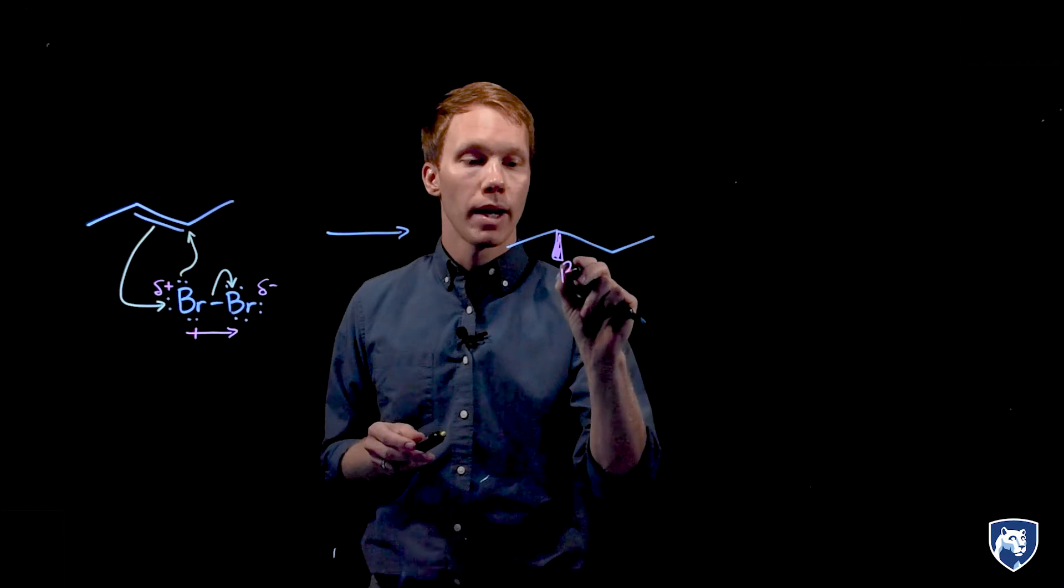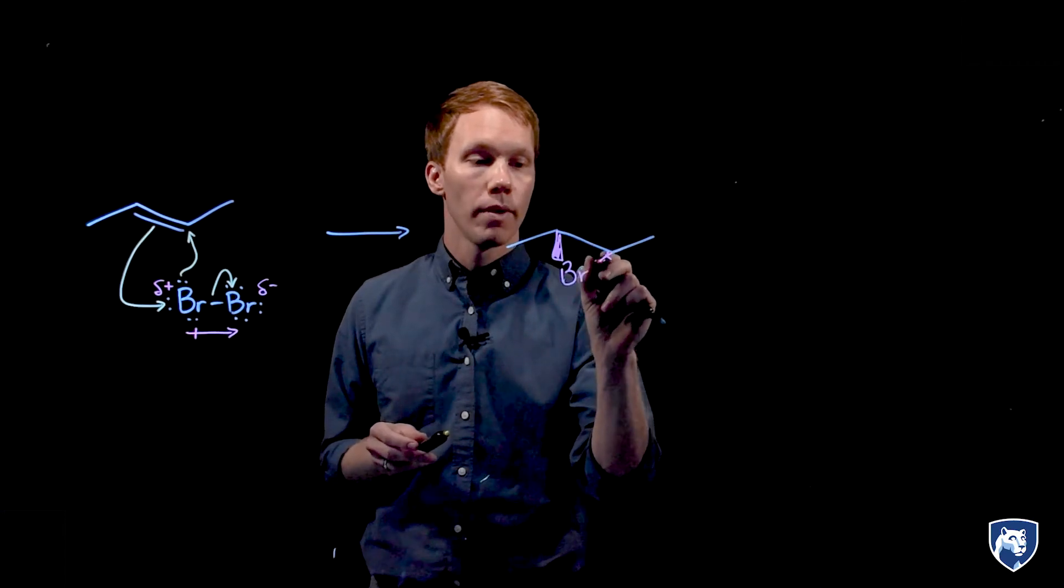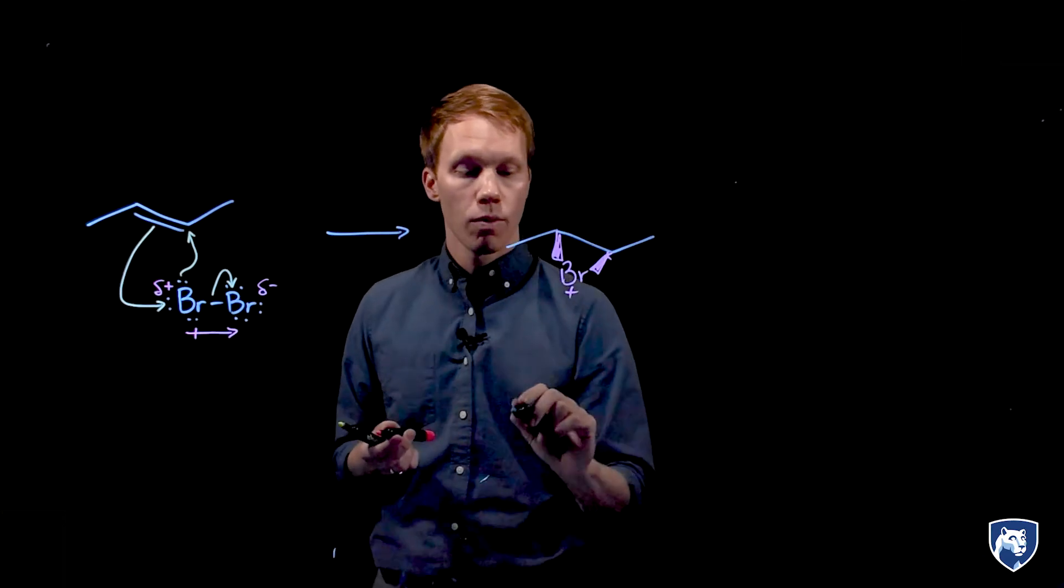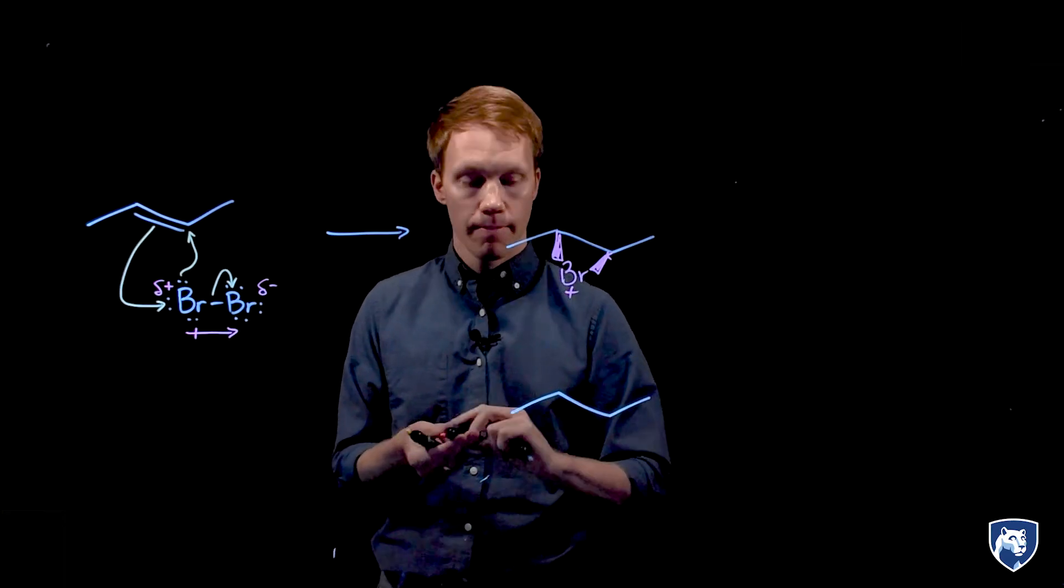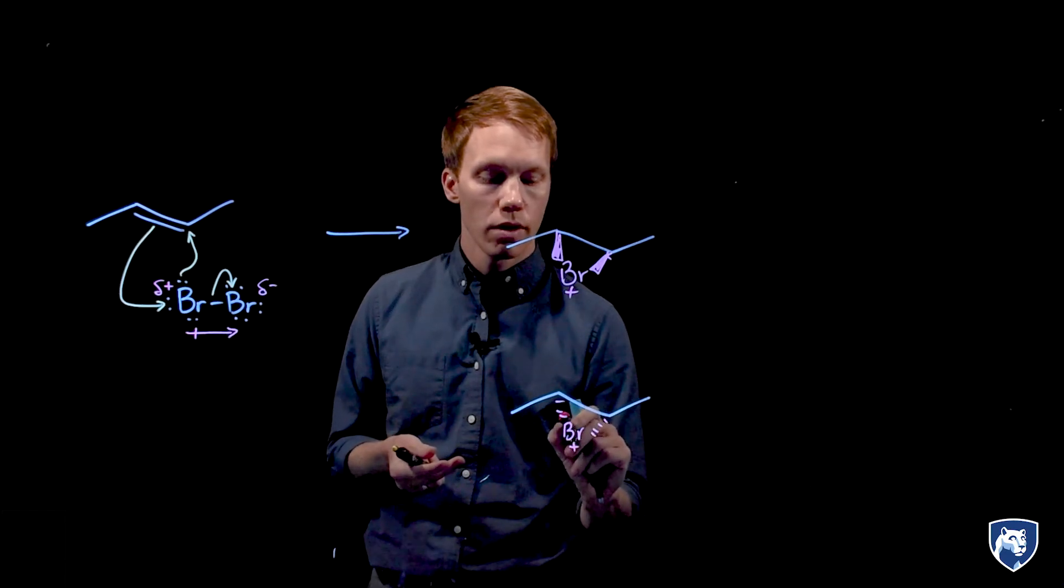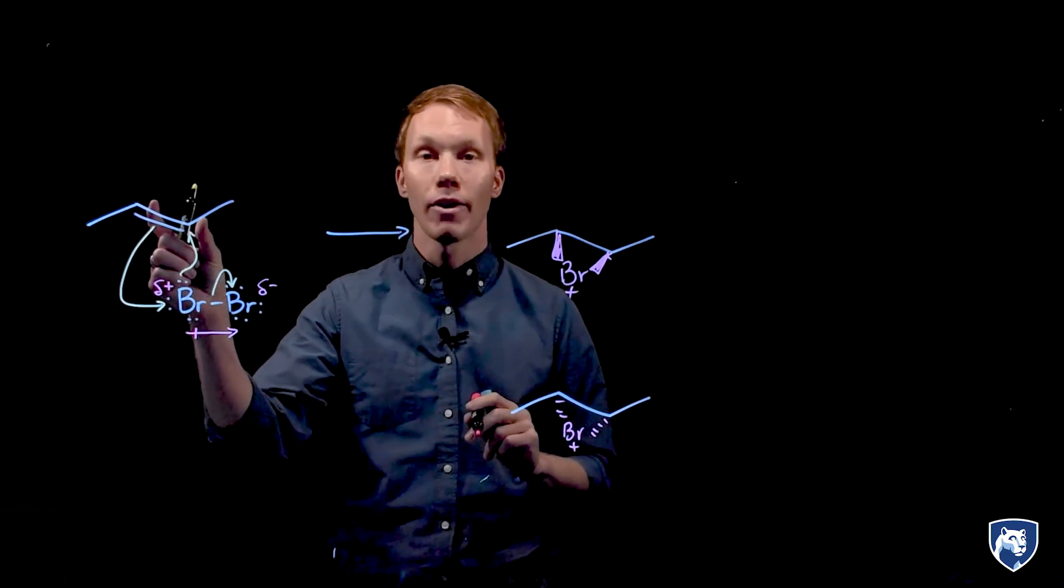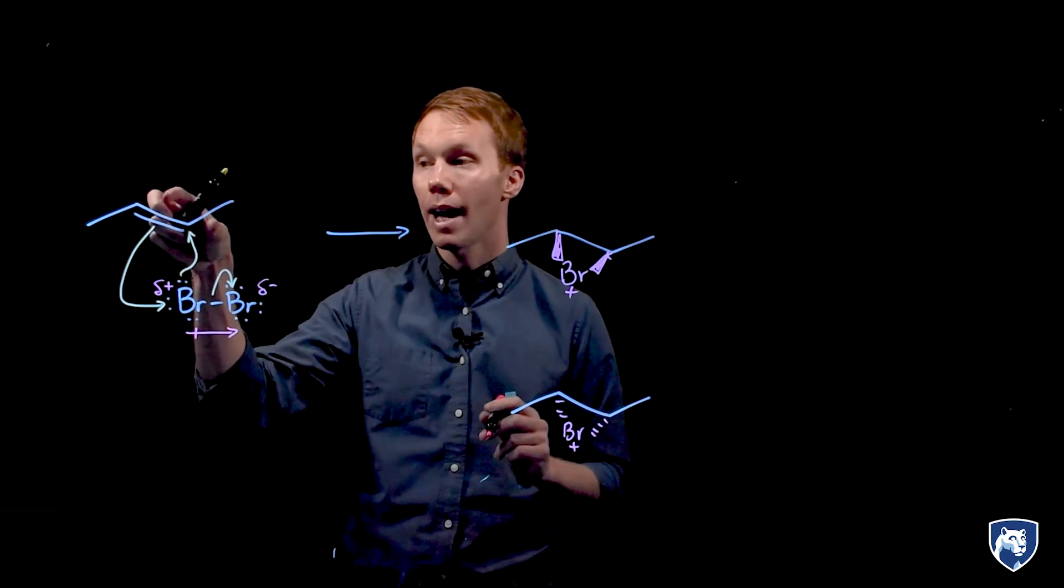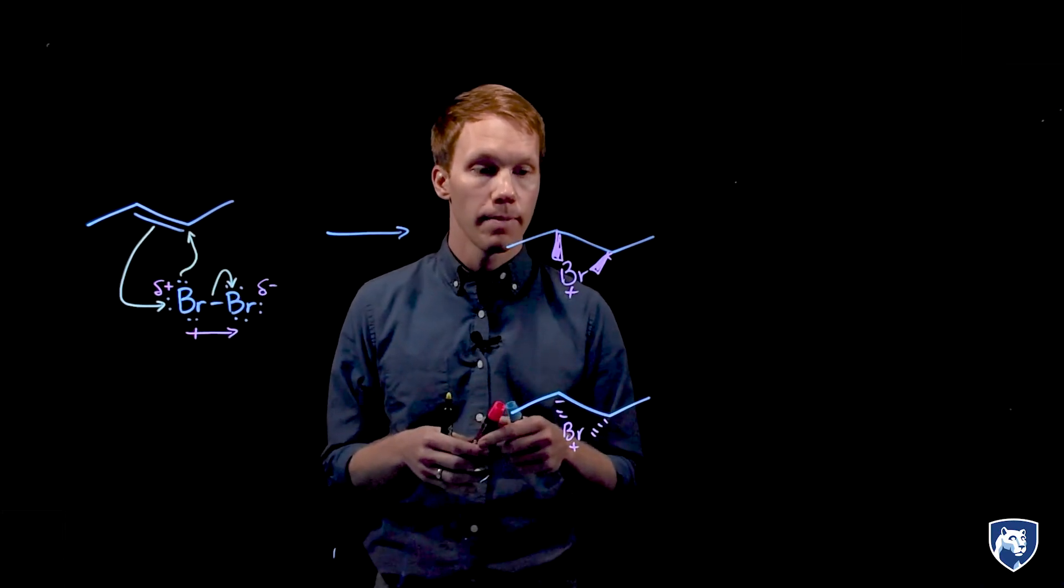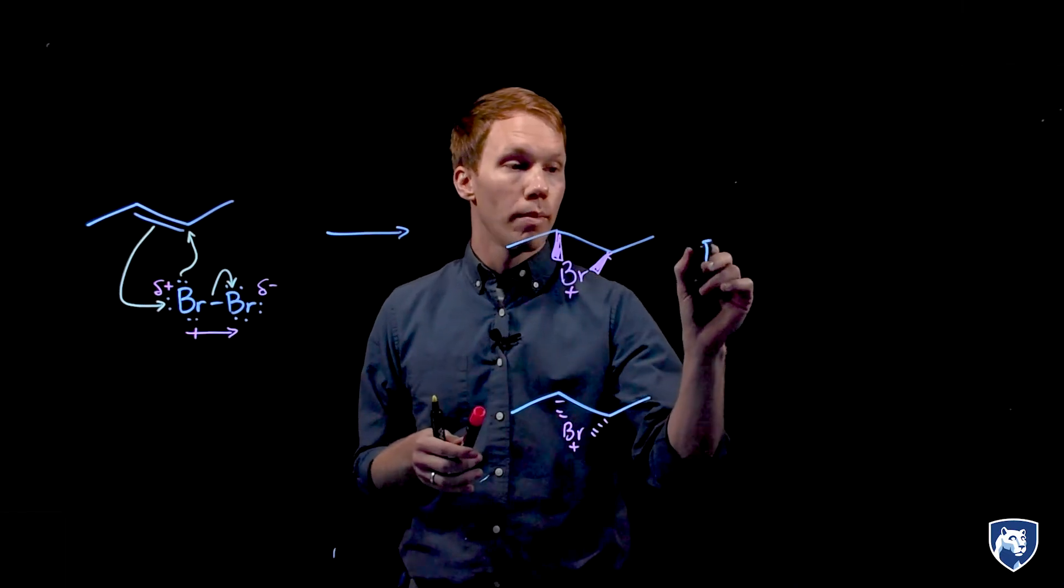This bromonium ion can form from the front of my alkene or it could form from the back of the alkene. These two bromonium ions are enantiomers and result from the fact that the alkene is planar. Bromine could add from the front face or it could add from the back face of that double bond. We also produce bromide ion here.